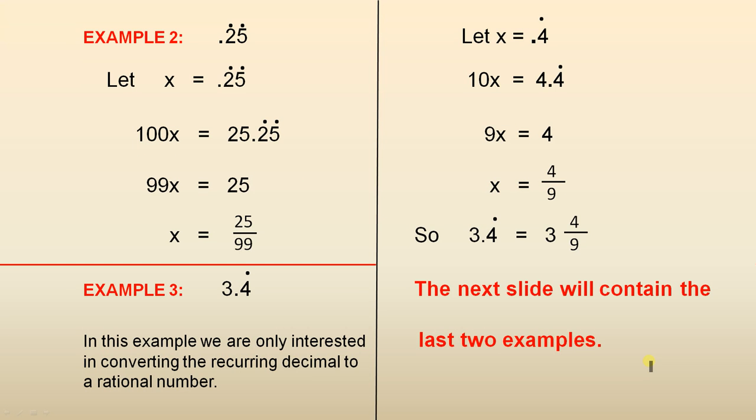Example 2. 0.25 recurring, where the 2 and the 5 recur. So those two numbers, for example, that means 0.25252525, etc. So let x equals that number.